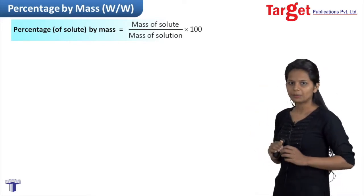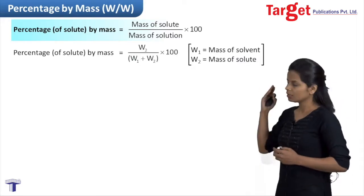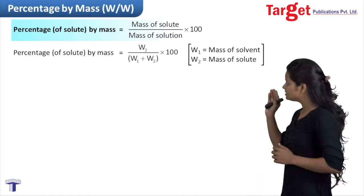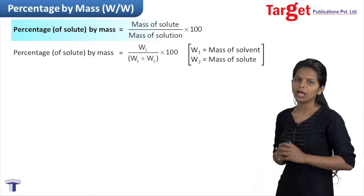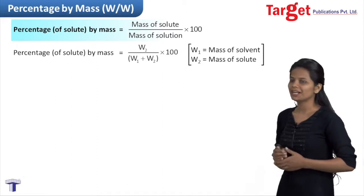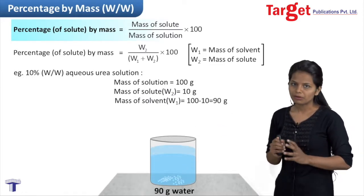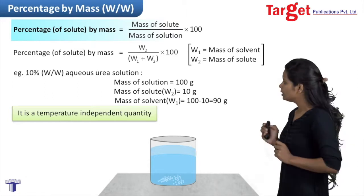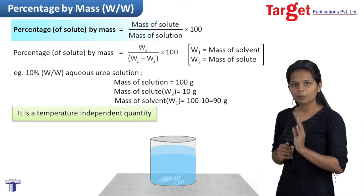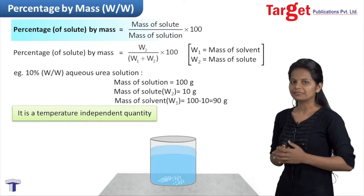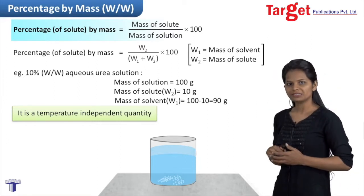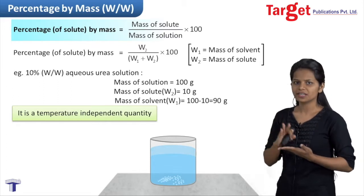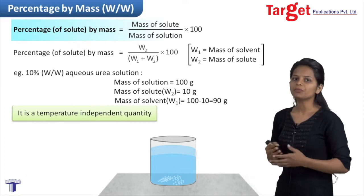This mathematical expression can be represented symbolically: mass of solute is represented as W2, and mass of the entire solution — assuming a binary solution with only one solute and one solvent — can be written as W1 plus W2. For example, a 10% by mass aqueous urea solution means you have a solution of 100 gram total, in which urea (the solute) is 10 gram and the solvent (water) is 90 gram. Since mass is a temperature-independent quantity, mass of solution does not change with temperature, and hence percentage by mass is a temperature-independent quantity.